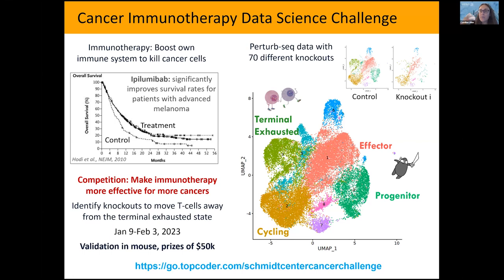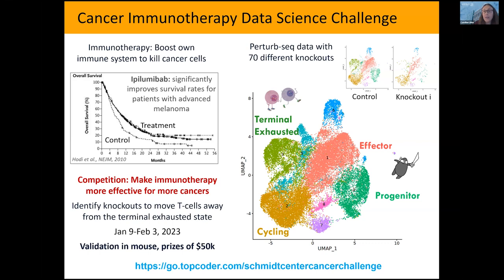These validation experiments are currently underway. People who won some of the challenges had literally never worked in biology — some came out of information theory — and it's exciting to see people from completely different fields get into this area. We can learn a lot from the methods they come up with that nobody here would be able to come up with.